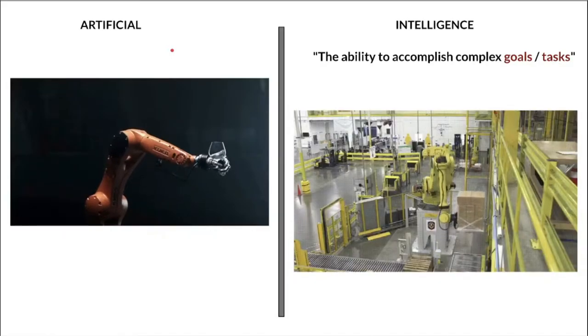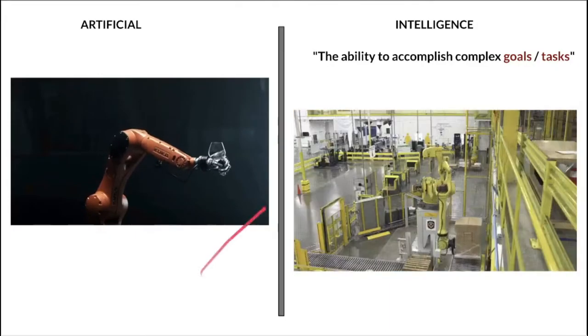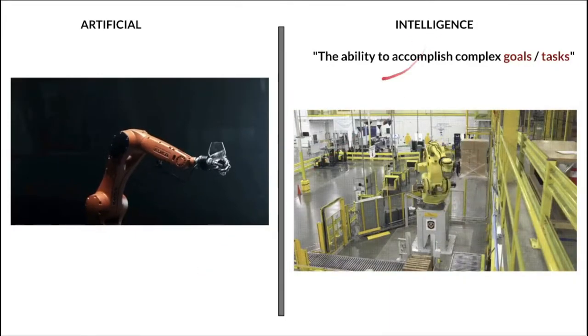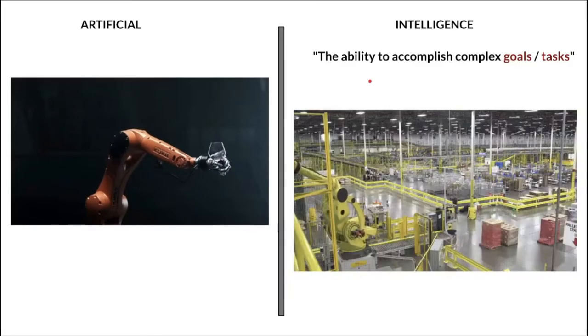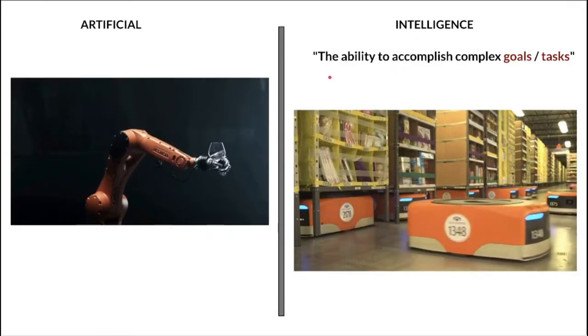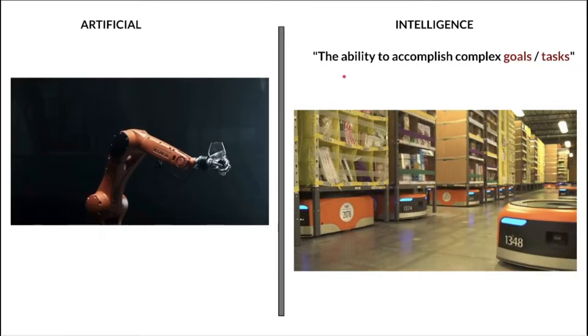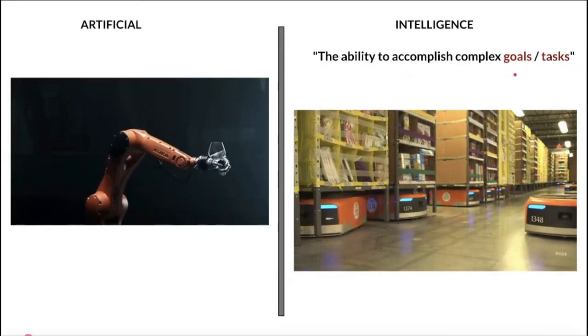Let's see the meaning of intelligence. Intelligence means the ability to accomplish complex goals or tasks. So when a machine or a program has the ability to accomplish complex goals or tasks, then it is called artificial intelligence.